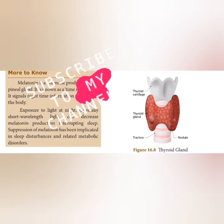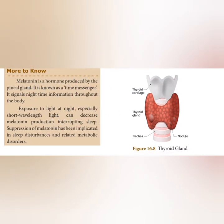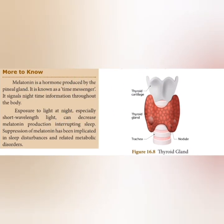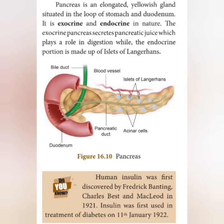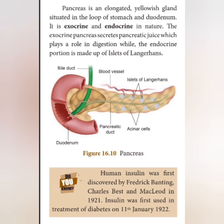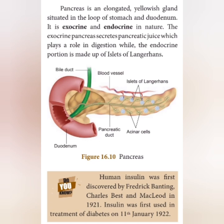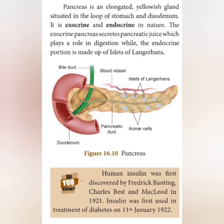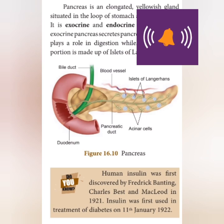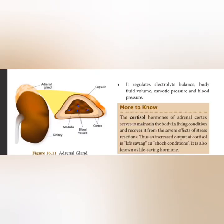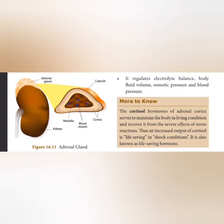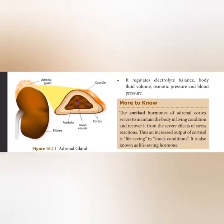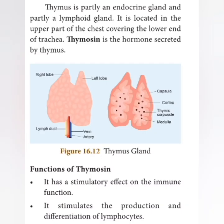Some important diagrams are given here: the thyroid gland diagram, the pancreas diagram, and the adrenal gland diagram — all very important. Key one-mark facts: the hormone called the 'time messenger hormone' is melatonin. The gland that acts as a dual gland, secreting both digestive enzymes and hormones, is the pancreas. The hormone called the 'life-saving hormone' is cortisol, secreted by the adrenal gland.